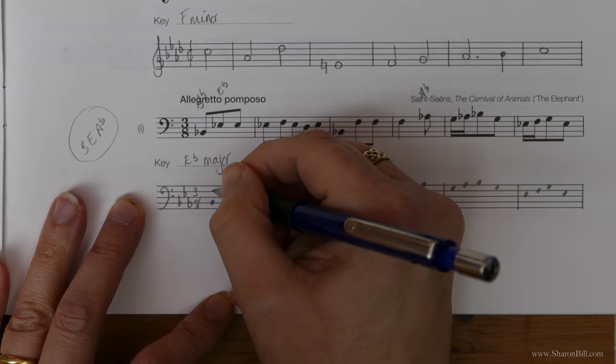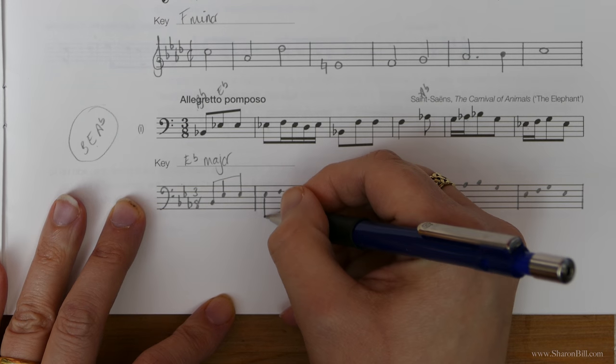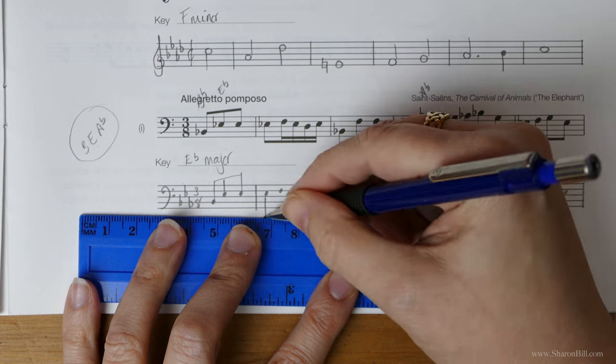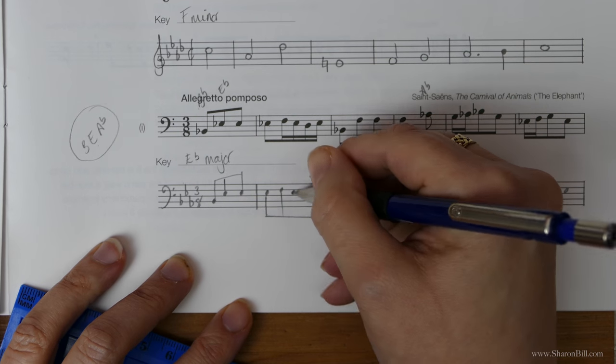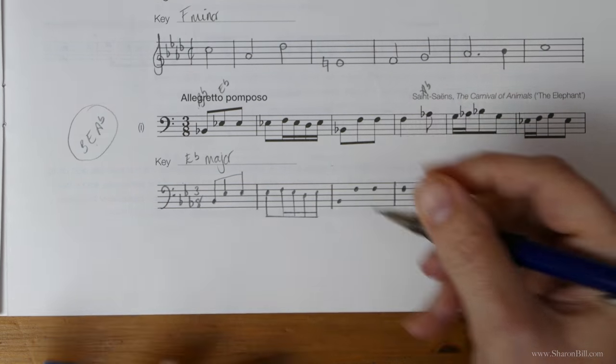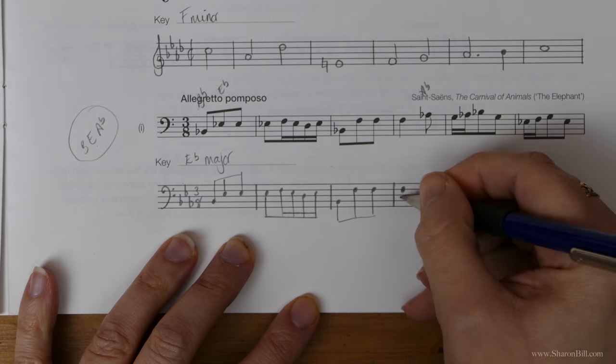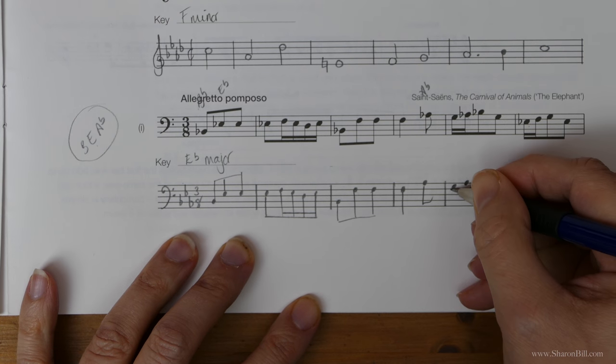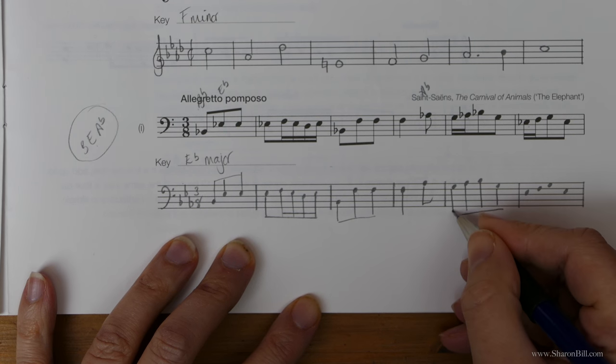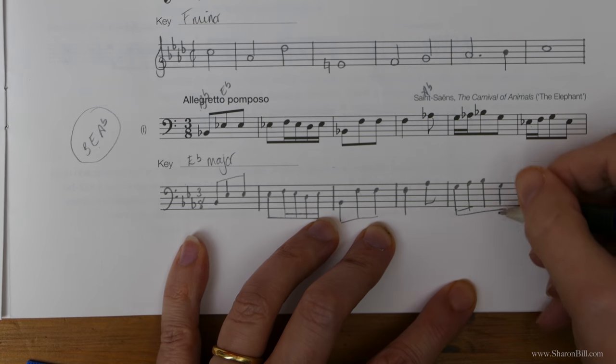Let's just copy the stems. We don't need any accidentals because the key signature takes care of all of that. So with all the thinking's done we're nearly home and dry. By all means use a ruler, keep it tidy. I'm just trying to be quick. And there we go that's that.